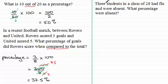As I said earlier I've got an example here which I'm sure you're going to need a calculator for. It's not going to be as easy to work out. We've got here three students in a class of 28 had flu and were absent. What percentage were absent? So I'll just give you a moment to pause the video. Do have a go at that and when you come back you can check your work solution with mine.